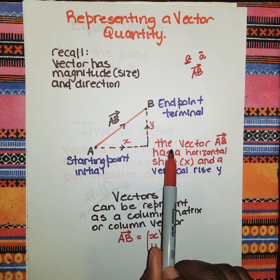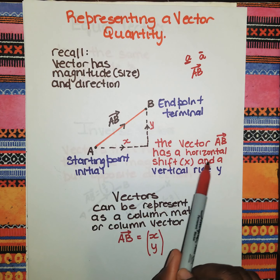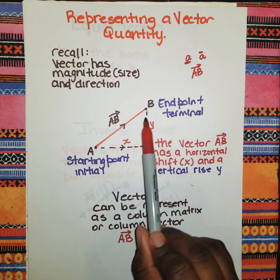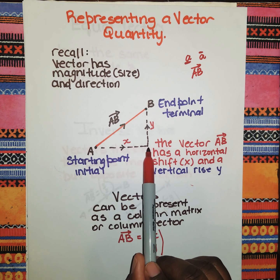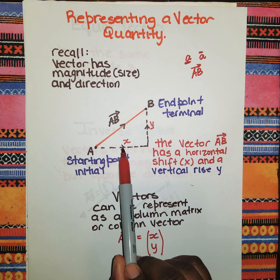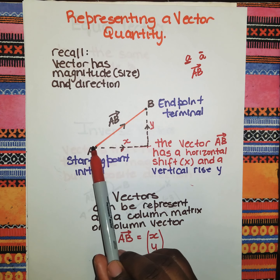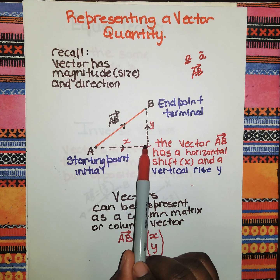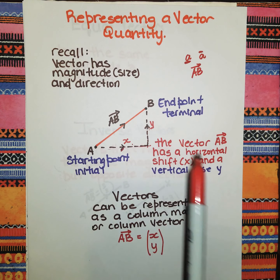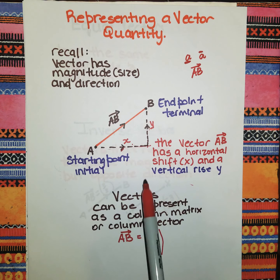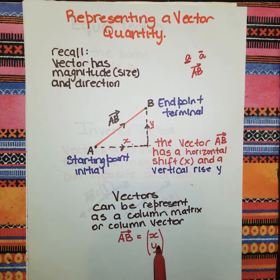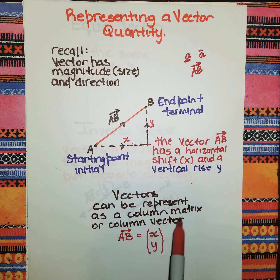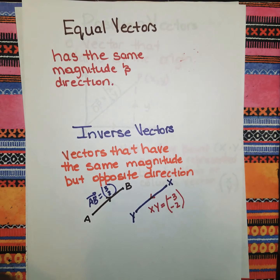A vector is basically a shift in the horizontal and a rise in the vertical. For vector AB, we have the x-movement (horizontal) and the y-movement (vertical). The horizontal movement represents x and the vertical movement represents y. So AB is represented as (x, y) given in column vector form — x comes first, then y.